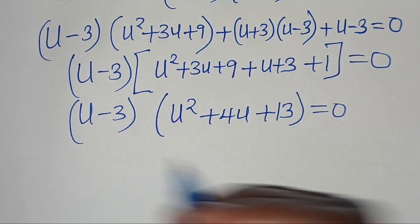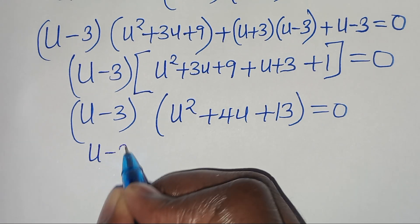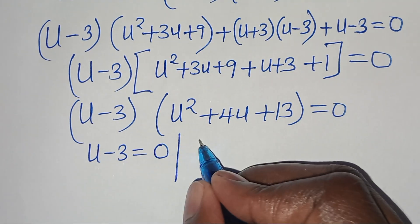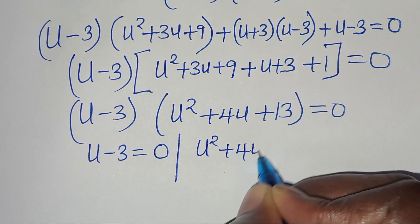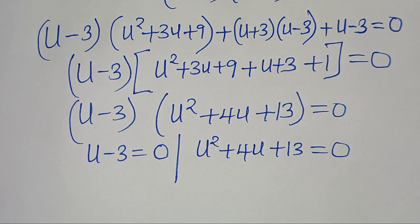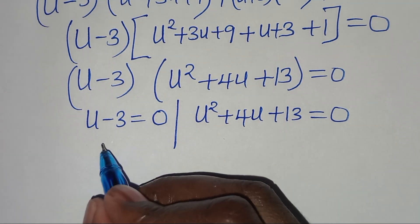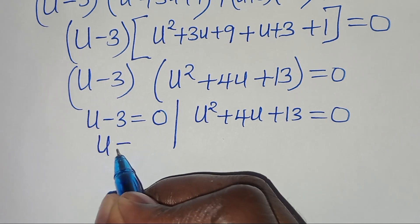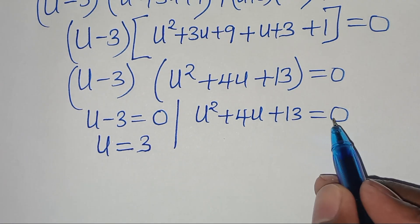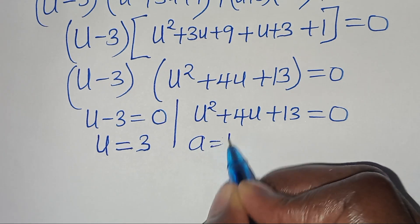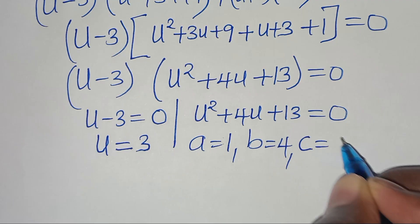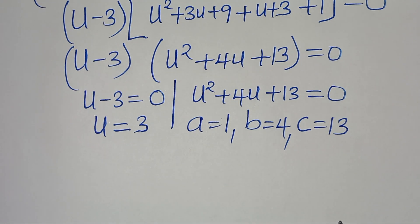We now have two parts. The first gives u minus 3 equals 0, so u equals 3. The second is the quadratic equation u² + 4u + 13 equals 0, with a = 1, b = 4, and c = 13.